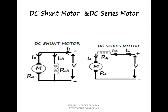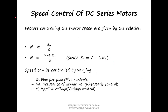For changing the speed of DC machines, the two important methods are changing the armature current and changing the field current. This can be done easily in a shunt motor by introducing a rheostat in the armature circuit or in the field circuit. The basic speed equation states that speed is proportional to back EMF (V minus I_A × R_A) and inversely proportional to flux φ. If we change the field current, the flux is going to change.